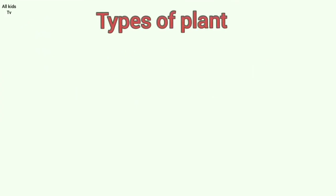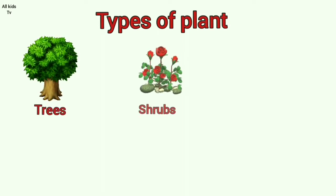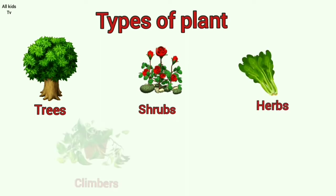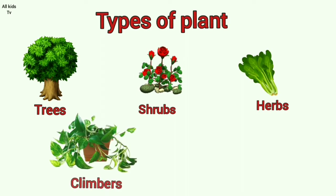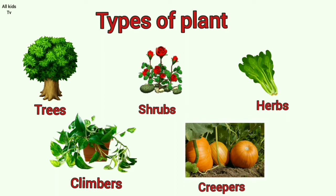Let's learn different types of plants. Primarily, there are five types of plants. They are trees, shrubs, herbs, climbers and creepers. Let's learn them in detail.